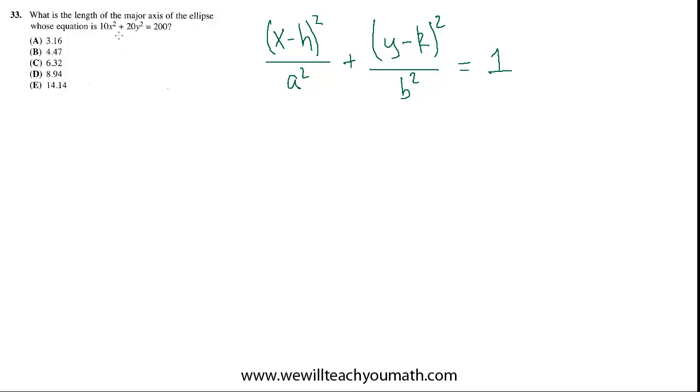So this is the general equation for an ellipse. We have a specific equation here, but it doesn't really look like this. So on first glance, you might not recognize, if they hadn't told us that it's an ellipse, that this equation describes an ellipse. So can we somehow change it around to fit this standard form? First thing we can do is divide by 200 on both sides. If we do that, we'll get x squared over 20 plus y squared over 10 equals one.